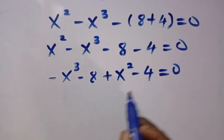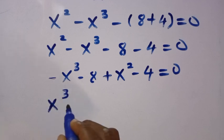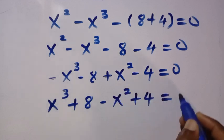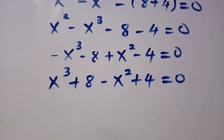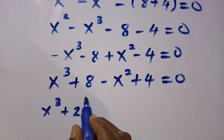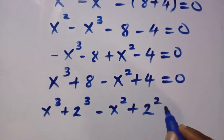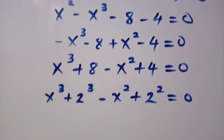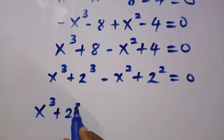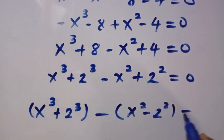Opening this one with negative out here, we have x cubed plus 8. Then x cubed plus 8 is 2 raised to power 3, so 2 cubed. We also have x cubed plus 2 cubed in bracket, then minus open bracket x squared minus 2 squared equals 0.